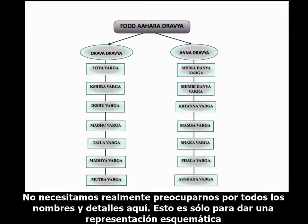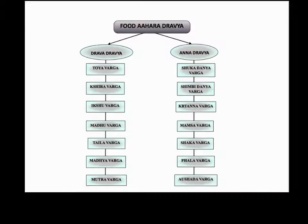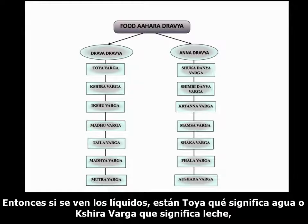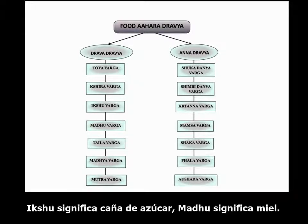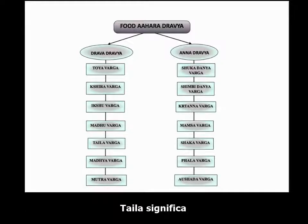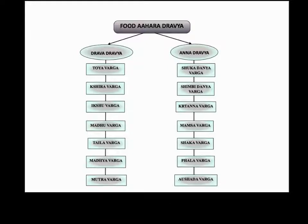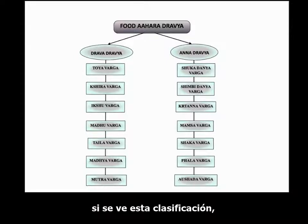We don't need to worry about all the names and details here. This is just to give a schematic representation of the very comprehensive classification that you see in these textbooks. If you look at the liquids, we have Thoya meaning water, Chira meaning milk, Ikshu meaning sugarcane, Mathu meaning honey, Thaila meaning oils, and then Madhya meaning alcohol, and Mutra meaning urine.